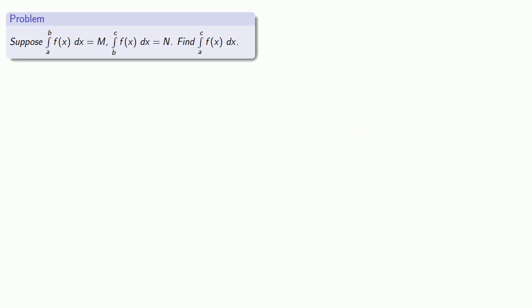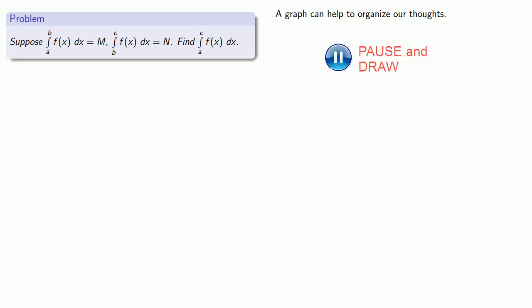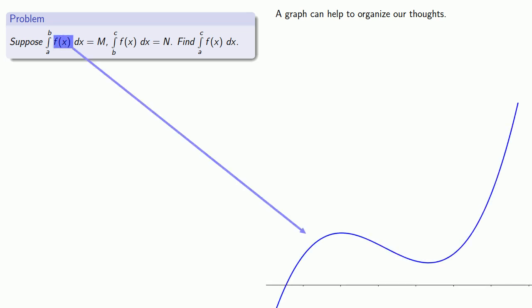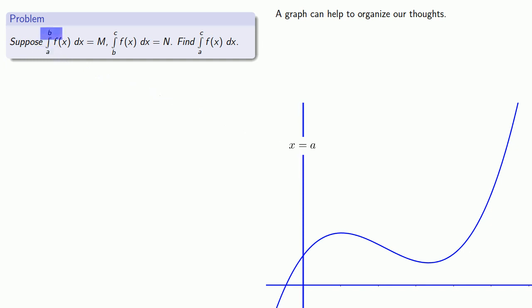How about combining two definite integrals? Suppose I know that the integral from a to b of f of x dx is m, and the integral from b to c is n. What about the integral from a to c? A graph can help us organize our thoughts. The first definite integral represents the area under the graph of y equals f of x, above the x-axis, from x equals a to x equals b.